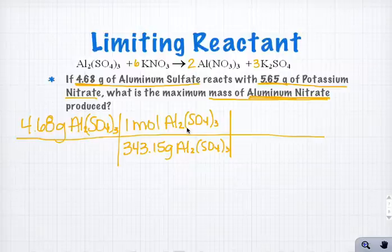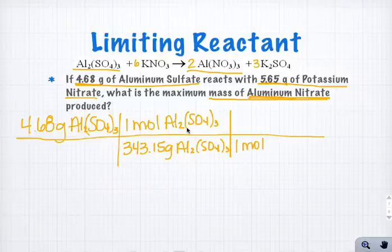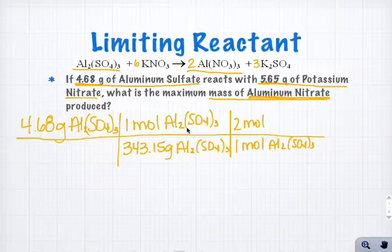Then from here, I can use the mole ratio from the balanced equation to convert from aluminum sulfate to aluminum nitrate. So it's a 1 to 2 mole ratio. So for every 1 mole of aluminum sulfate, I'm going to get 2 moles of aluminum nitrate.